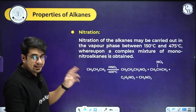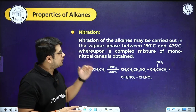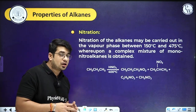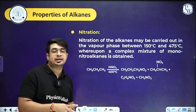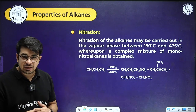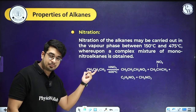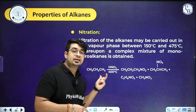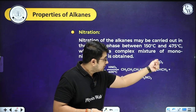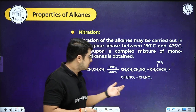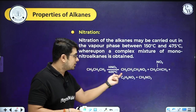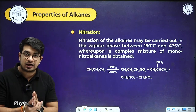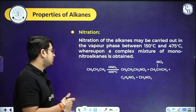Nitration of alkanes can be carried out in the vapor phase between 150 and 475°C, producing a complex mixture of mono-nitroalkanes. Starting with a simple alkane, the reagent is HNO3 at about 400°C. The NO2 group can attach at different carbon positions — there's also a chance of C-C bond cleavage, producing different types of multiple products, including CH3CH2NO2 as well as CH3NO2 from propane.